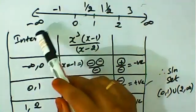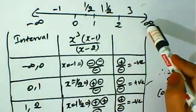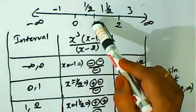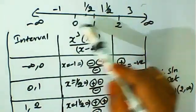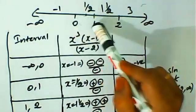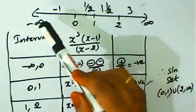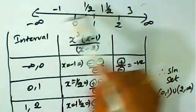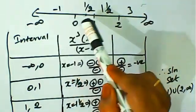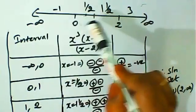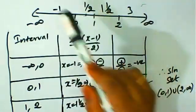The number line goes from minus infinity to plus infinity. We mark the points zero, one, and two on the number line. Now we determine the sign of the expression in each interval.